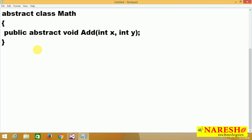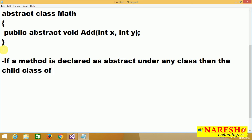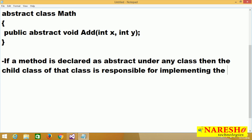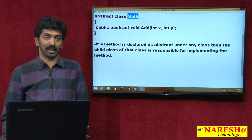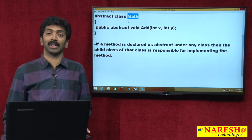Generally when we define an abstract class, we get a doubt: without a method body, what will be the use of the method? When a method is declared as abstract under any class, the child class of that class is responsible for implementing the method. If you define a method as abstract in a class, the child class of this particular class has to implement the method — compulsory, cannot escape.